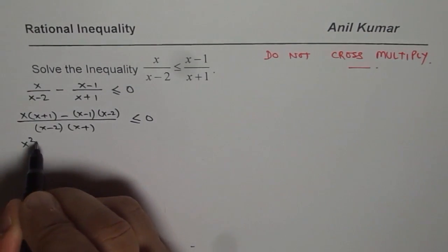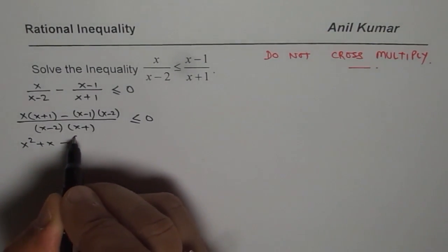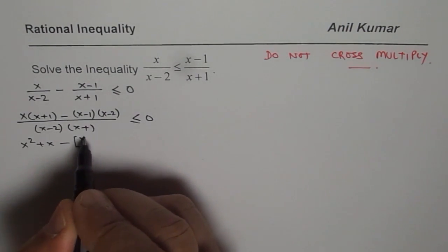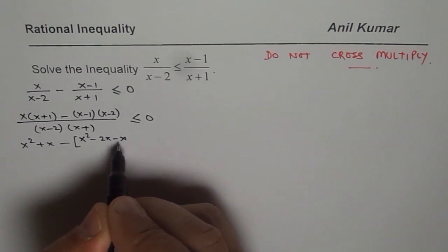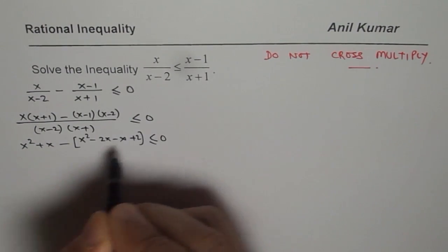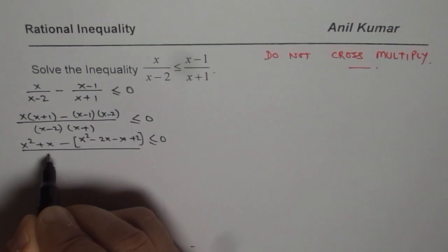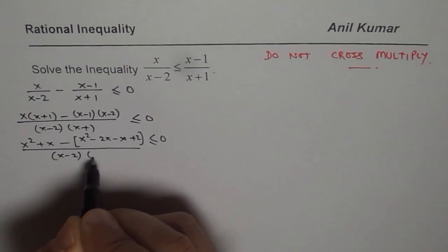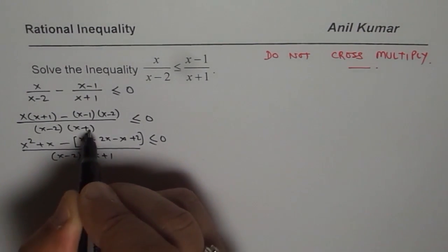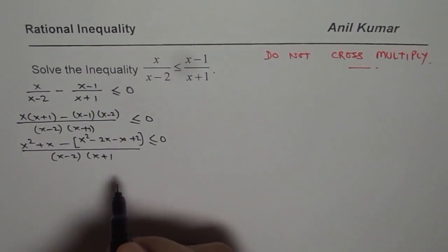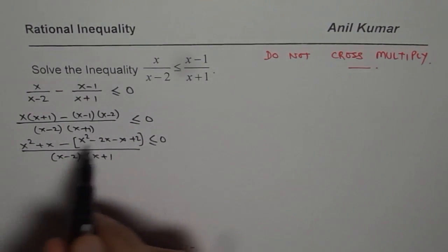So you multiply, you get x square plus x. Here, let us put a bracket first. So we get x square minus 2x minus x plus 2, less than equals to 0, but everything should be divided by x minus 2 times x plus 1. Do not expand denominator, that is key. Now let us simplify this.